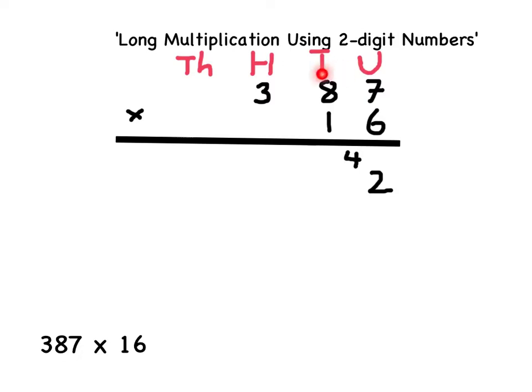My next multiplication is 80 multiplied by 6. If I know that 8 multiplied by 6 is 48, then 80 multiplied by 6 must be 480. I must also add the 40 from 42 onto 480, which gives me an answer of 520.